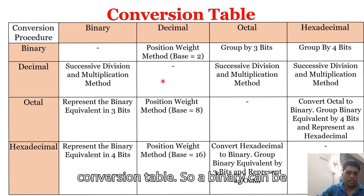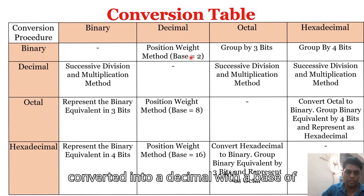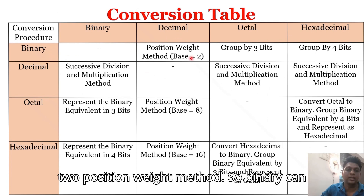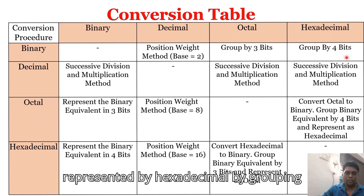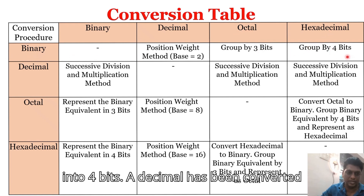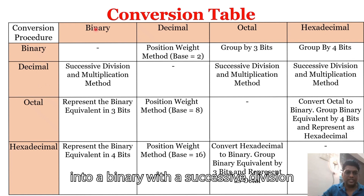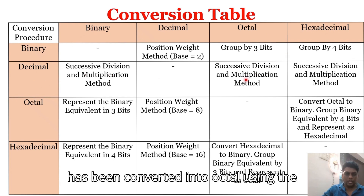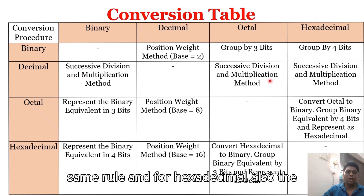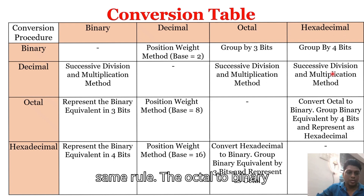Binary can be converted to decimal using the position weight method with base 2. Binary can be represented in octal by grouping three bits, and in hexadecimal by grouping four bits. Decimal is converted to binary using the successive division method, and the same rule applies for decimal to octal and hexadecimal.